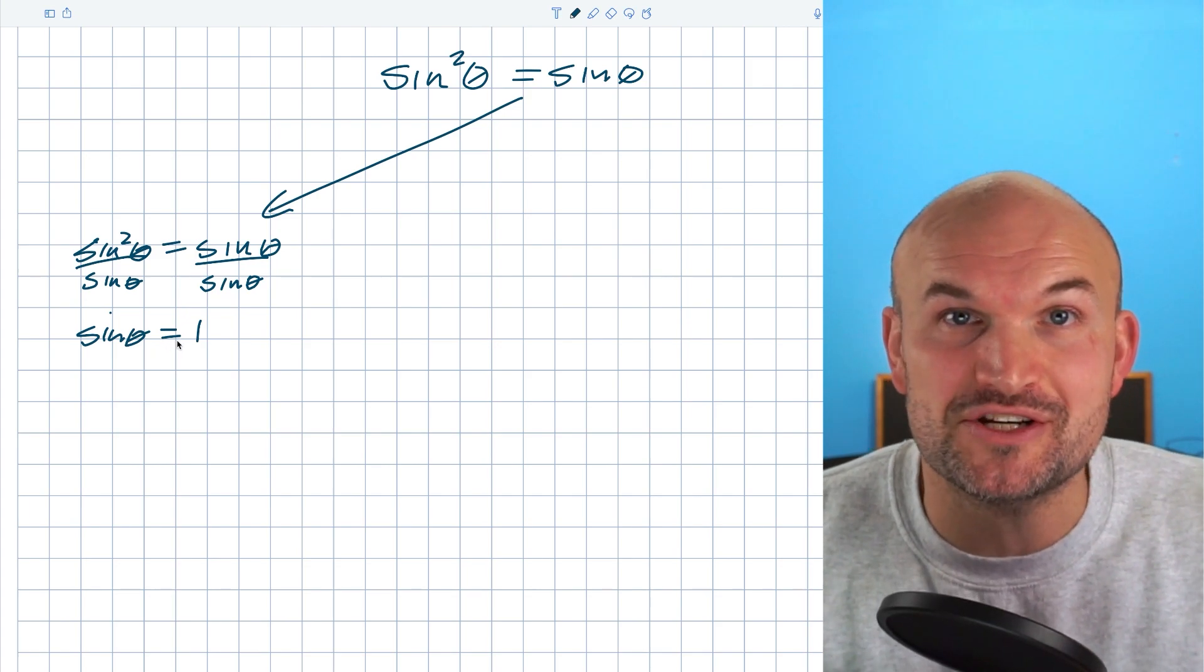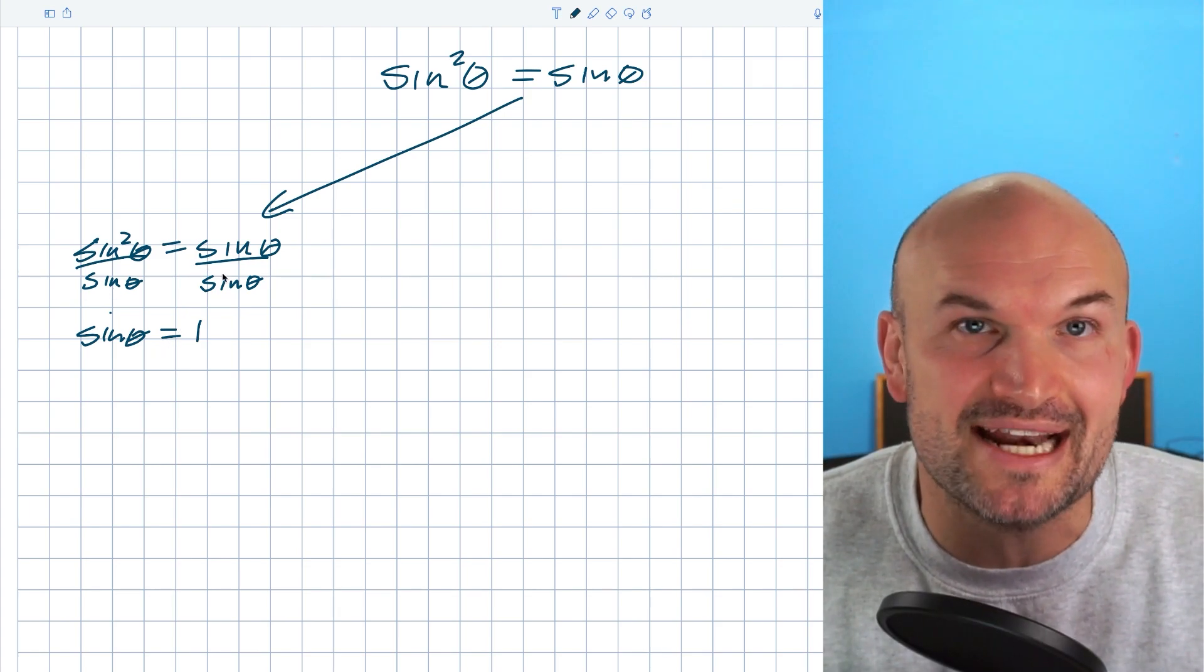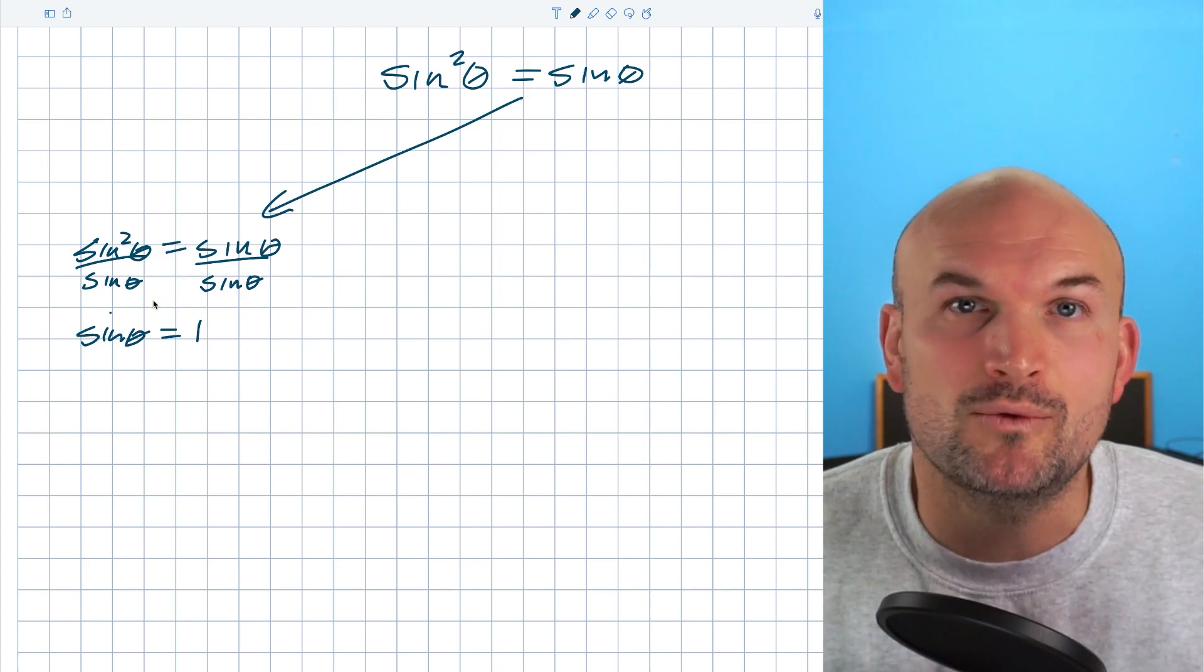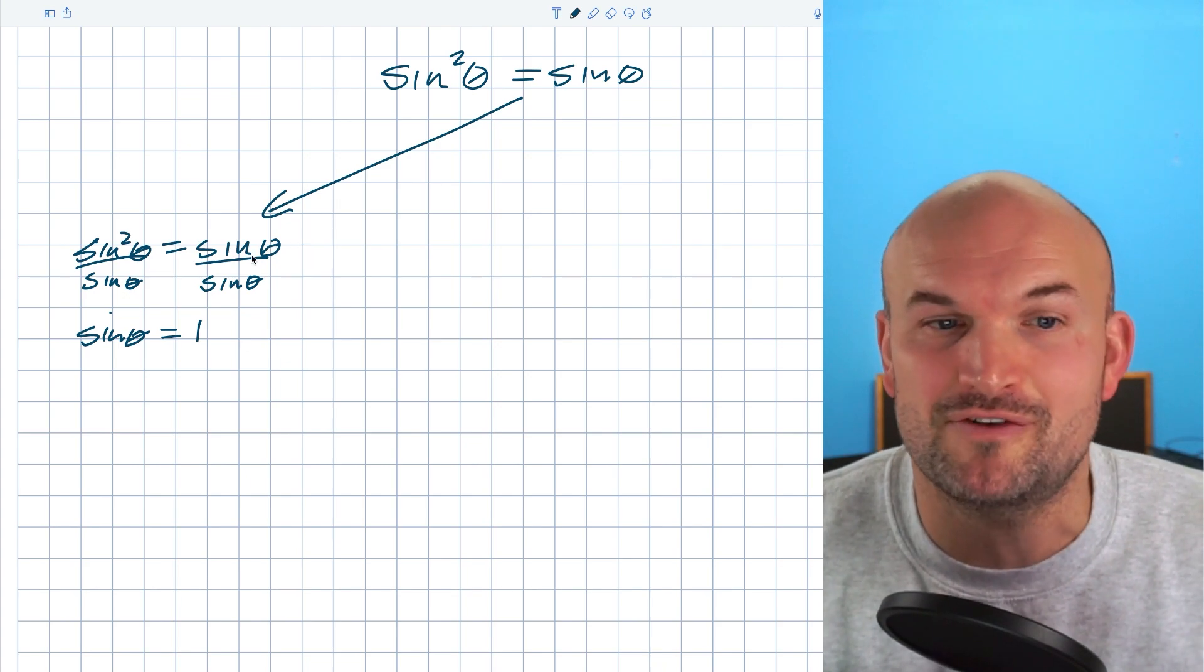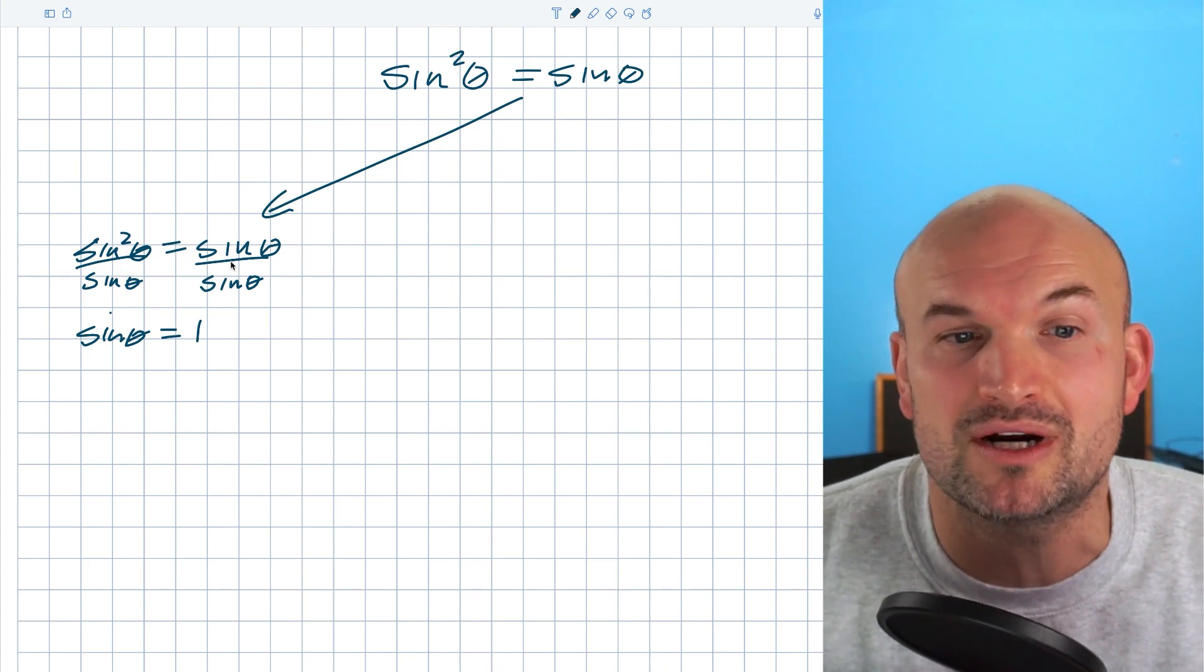This is actually a solution to this equation, but the problem is by dividing sine of theta and reducing the power of the equation, we actually left off another solution. So please be very careful when dividing by trigonometric functions. We don't want to reduce the power of the equation.